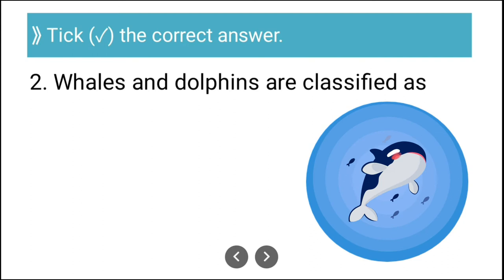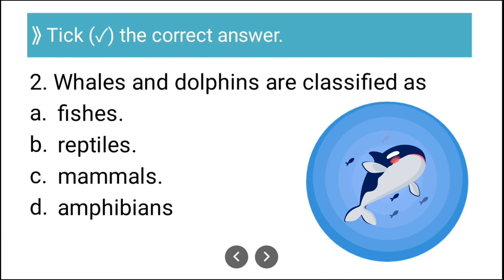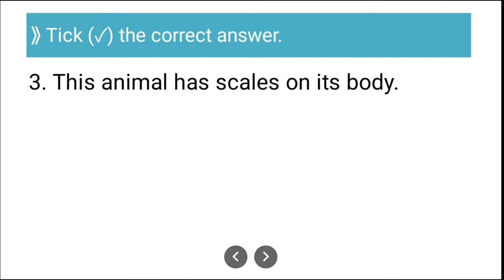Question two: Whales and dolphins are classified as — fishes, reptiles, mammals, or amphibians. The correct answer is C — mammals. Whales and dolphins are classified as mammals.